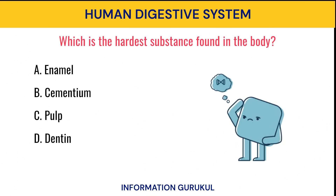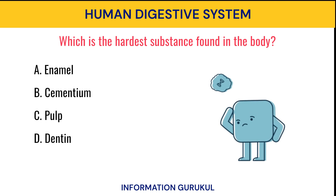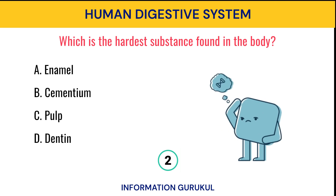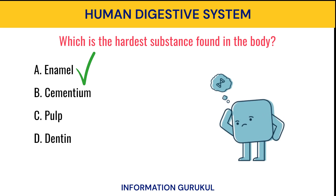Which is the hardest substance found in the body? Enamel.